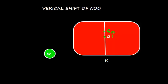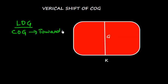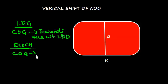So we have a thumb rule that in case of loading, COG will shift towards the weight loaded. And in case of discharge, COG will shift away from the weight discharged.